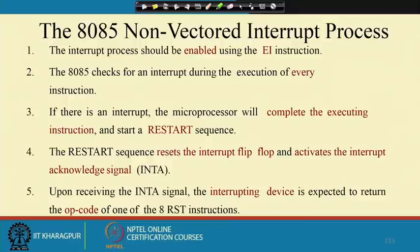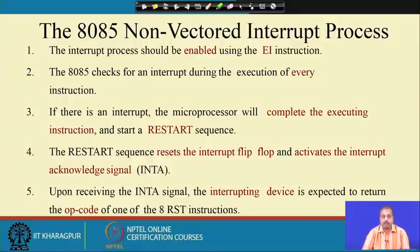The restart sequence first resets the interrupt flip-flop — the interrupt enable flip-flop is deactivated at the beginning of this restart operation. Then it activates the interrupt acknowledge signal INTA. For the non-vectored interrupt, INTR is the non-vectored interrupt line in 8085. When the interrupt is detected, the processor resets the interrupt flip-flop and then activates the interrupt acknowledge signal INTA, which is an active low signal — it is made low to activate it.